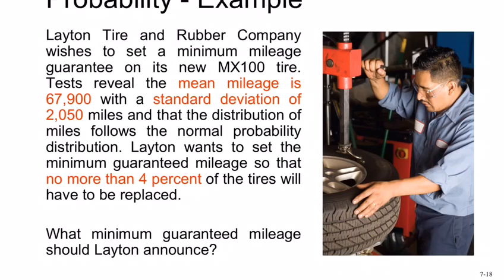Now you have to find how many years you want to guarantee the thing. Look at this example - the company gives you the probability and now they ask you to find how much is the mileage. Layton Tire and Rubber Company wishes to set a minimum mileage guarantee for this tire.